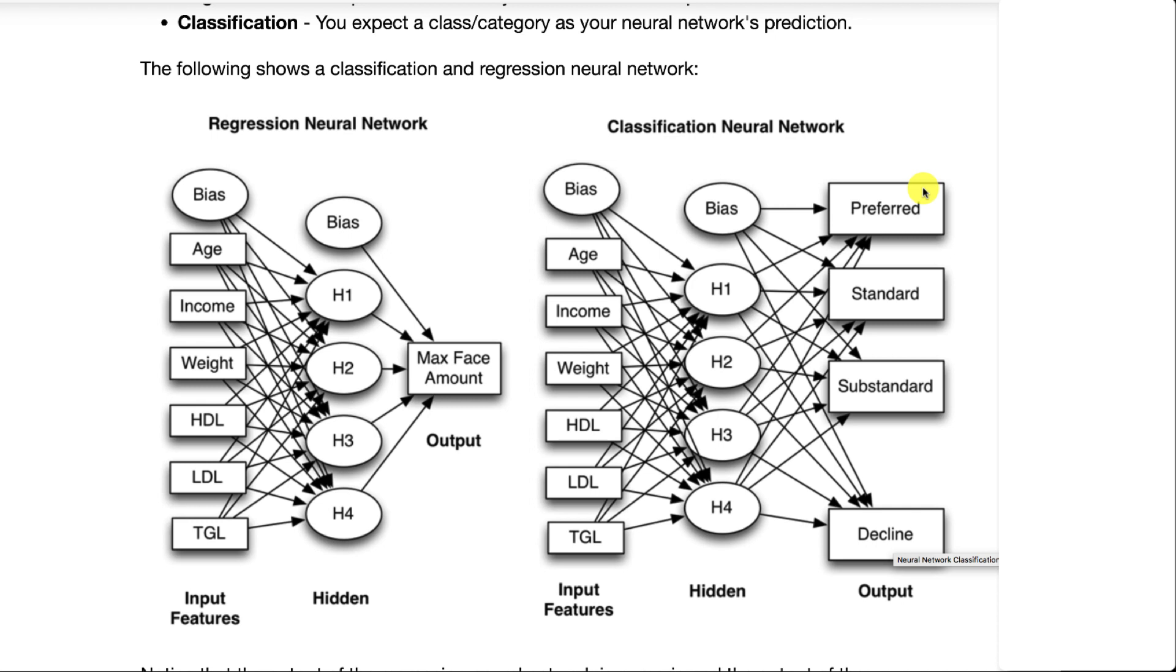If it's a binary classification neural network, meaning it's only classifying between two things, usually it'll just have one output neuron and that specifies the probability of it being one of those classes.